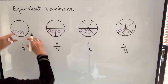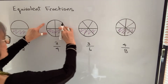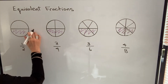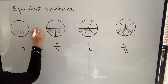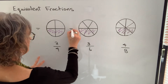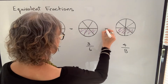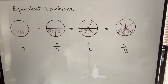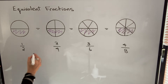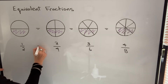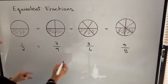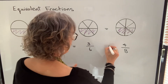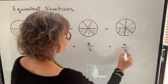But if you take a look at all these pies and the amount that's shaded, the amount that's shaded in each pie is going to be the same. So what that means is that one half is equal to two fourths, and it's also equal to three sixths, and it's also equal to four eighths.